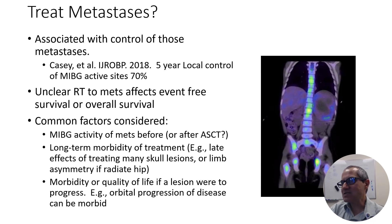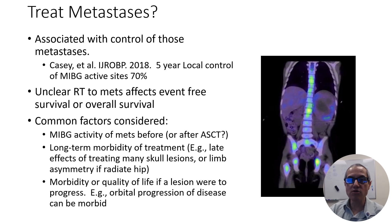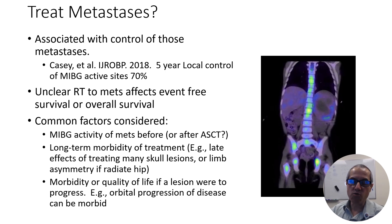Practice in treating metastases really varies by institution. At our institution, we look at MIBG activity both before and after autologous stem cell transplant and will typically treat a couple of sites that remain MIBG-active. We factor in late morbidity — if a patient has five or six or many more sites around the skull, one has to think carefully about long-term morbidity, especially when patients are typically quite young. But we also factor in morbidity should the patient progress in a particular location. For example, we might be more inclined to treat a metastasis in the orbit because progression there can be quite morbid for the patient.